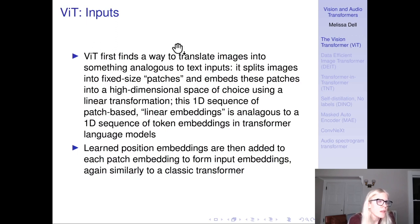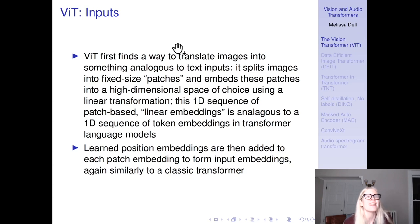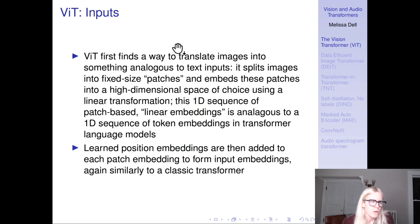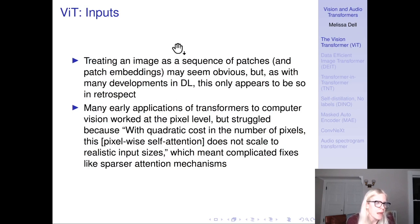The ViT needs a way to take images and turn them into something analogous to text. It does that by splitting the image into fixed-size patches — either 16x16 or 8x8 pixels — and embeds these patches into a high-dimensional space using a linear transformation. This creates a one-dimensional sequence of patch-based linear embeddings analogous to a one-dimensional sequence of token embeddings in transformer language models. Just like in the language transformer, learned position embeddings are added to each patch embedding to form input embeddings. Treating an image as a sequence of patches may seem obvious in retrospect.